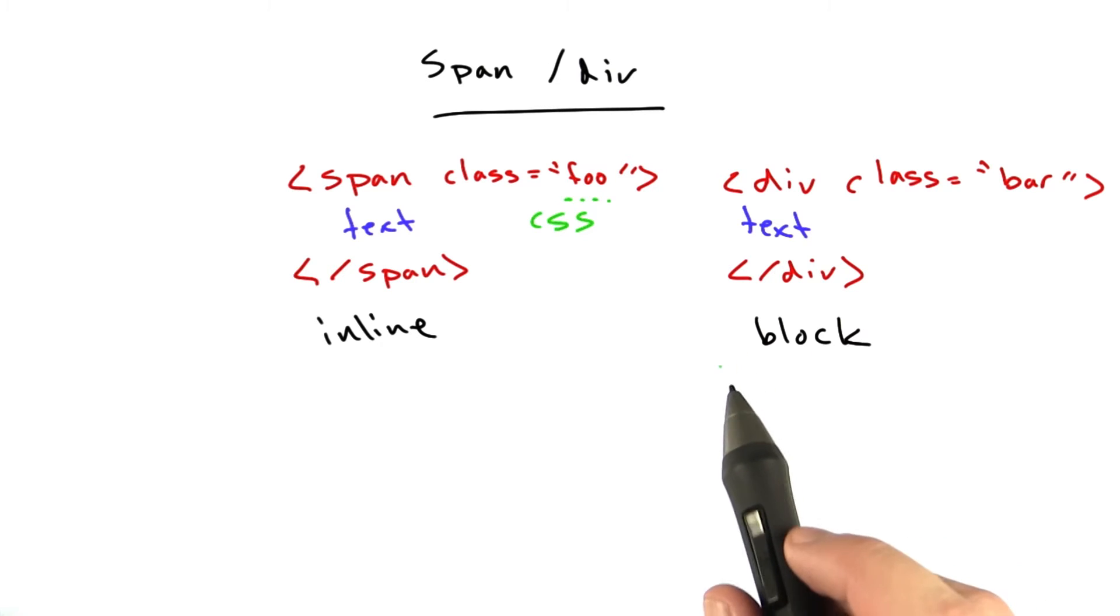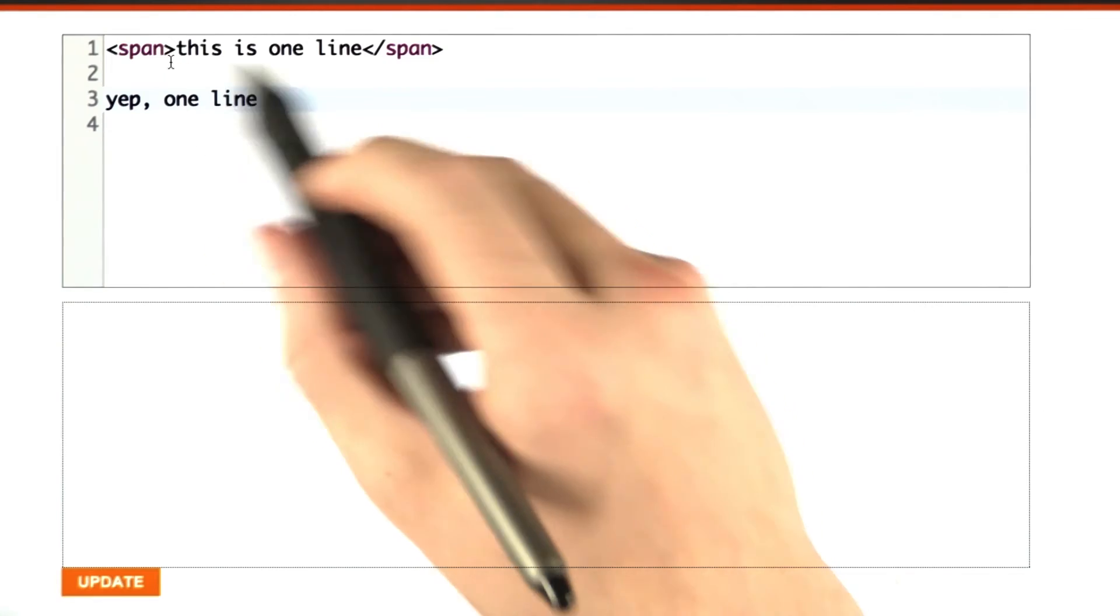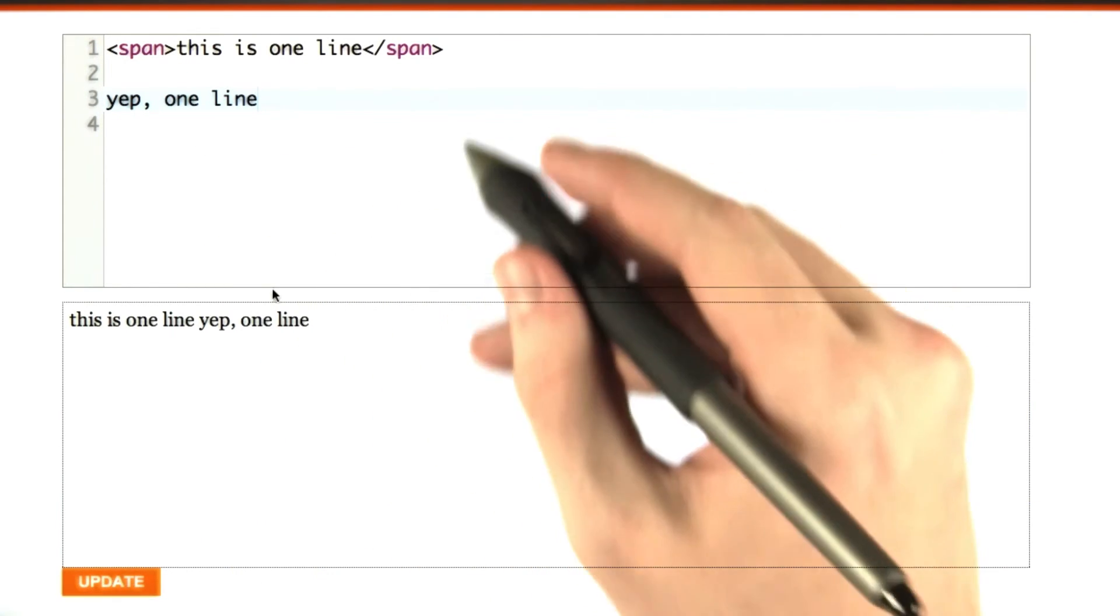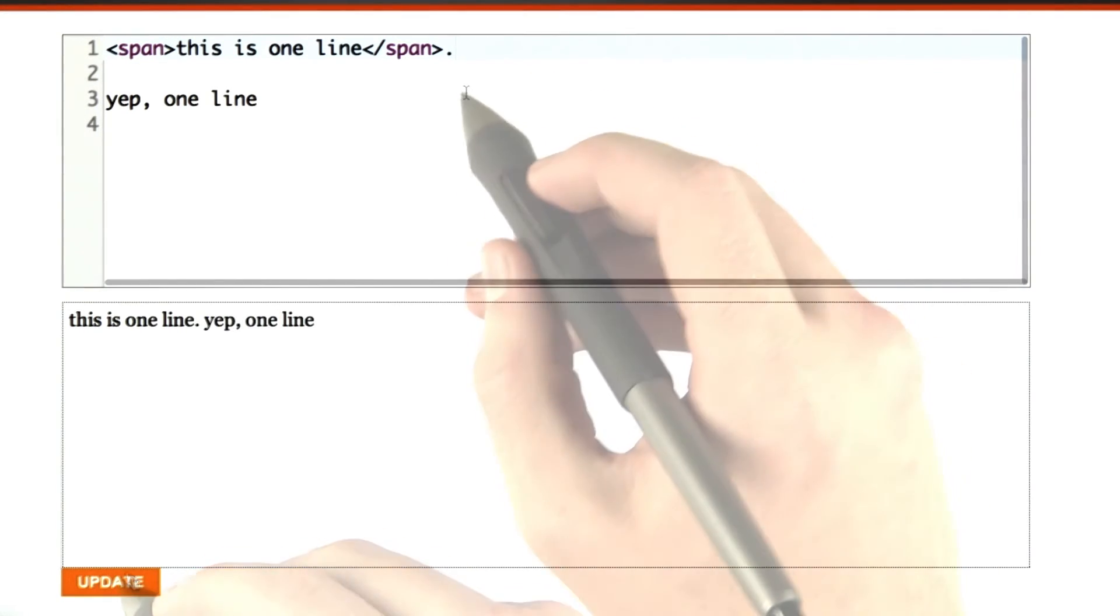Let's play around with these in the browser a little bit real quick so you can see what I'm talking about. Okay, so we've got our text, and our first line is wrapped in span. And it behaves as we would expect an inline element to behave.